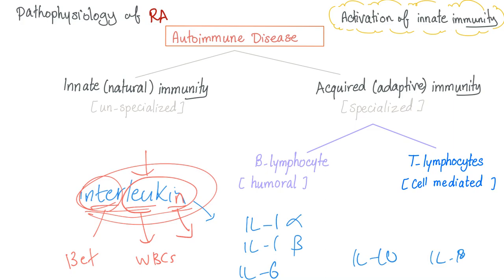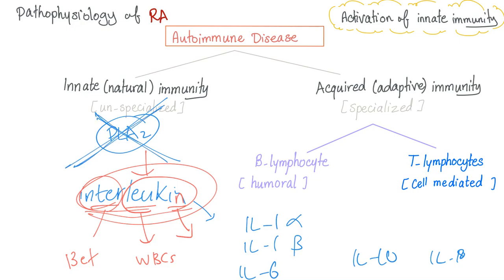What's the mechanism of action of glucocorticoids? First, glucocorticoids inhibit phospholipase A2. When you block phospholipase A2, you have no arachidonic acid; no arachidonic acid means no prostaglandin; no prostaglandin means no inflammation. That's why steroids are the strongest anti-inflammatories known to man.